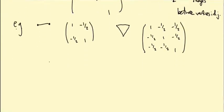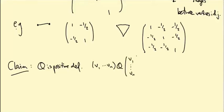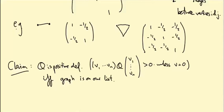So now the claim is that Q is positive definite. In other words V1 up to VN, Q V1 down to VN is positive unless V is zero. If and only if the graph that we start with is on our list of allowed Dynkin diagrams. So I'm not going to prove this, because it's not hard, you just need to do a lot of case analysis. I'll prove, for example, that this one is not positive definite, this triangle, and that means you can never have a triangle in your graph.